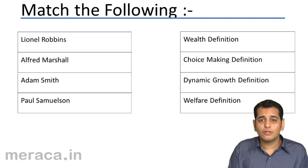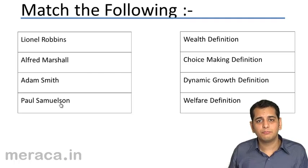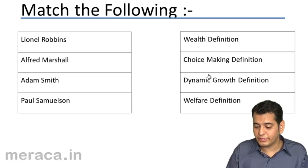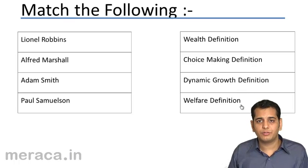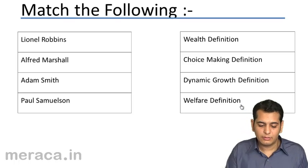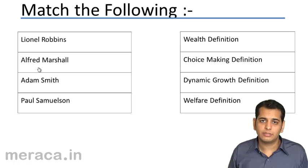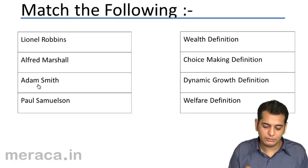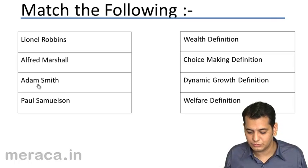In the first column, we have Lionel Robbins, Alfred Marshall, Adam Smith, and Paul Samuelson. In the second column, we have the wealth definition, the choice making definition, the dynamic growth definition, and the welfare definition. We just need to match them: Lionel Robbins gave which definition, Alfred Marshall gave which definition, Adam Smith gave which definition, and Paul Samuelson gave which definition.